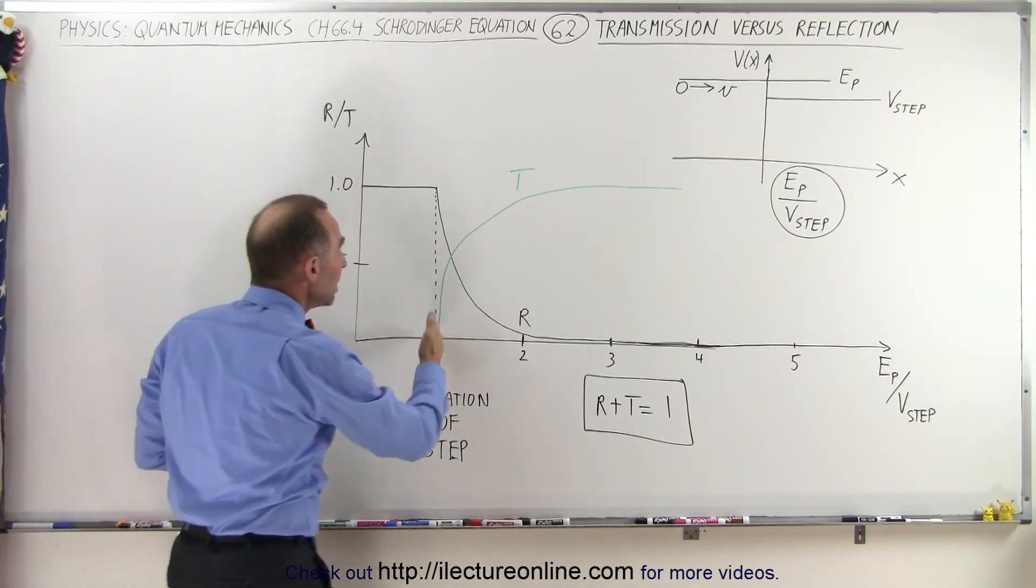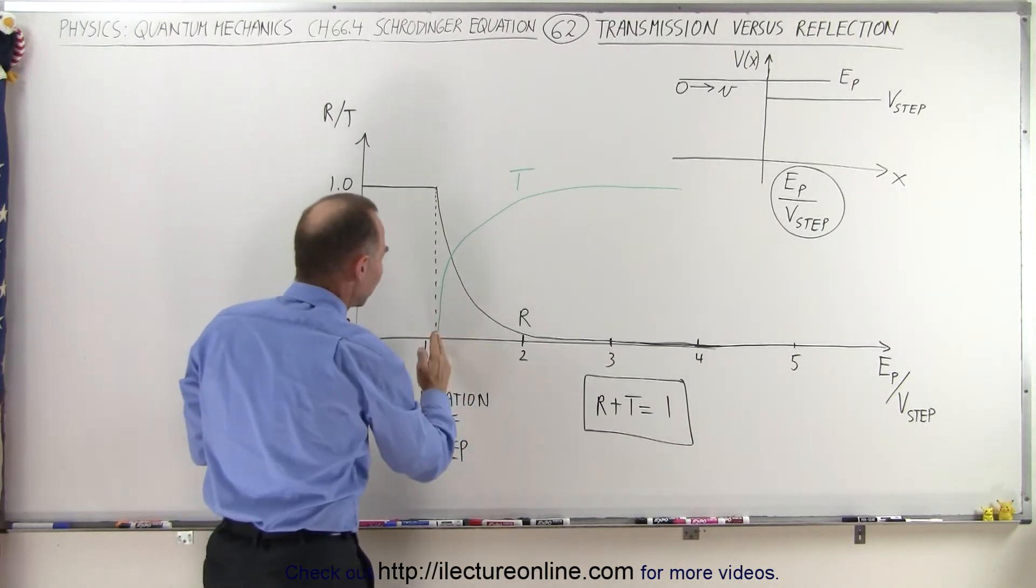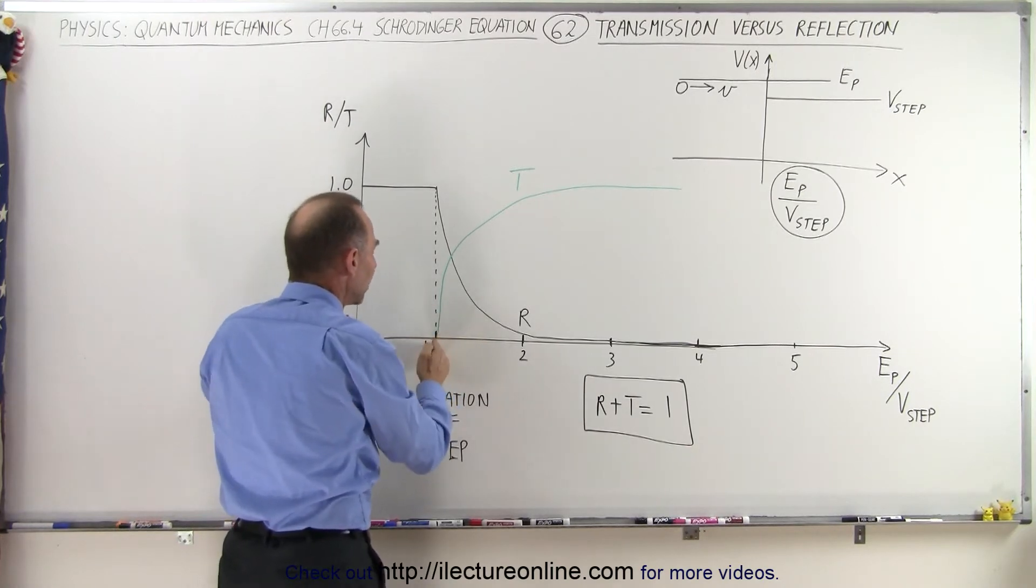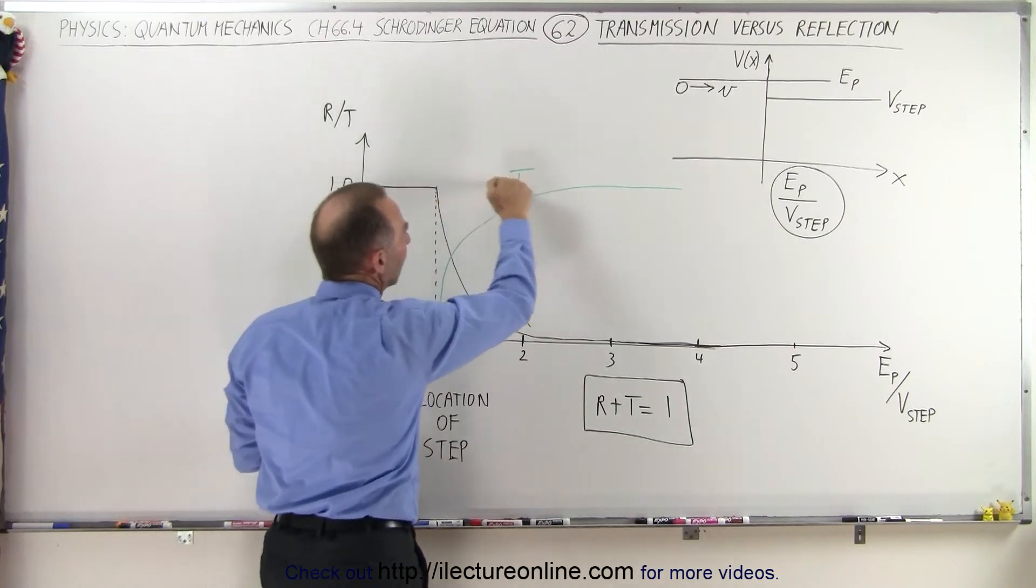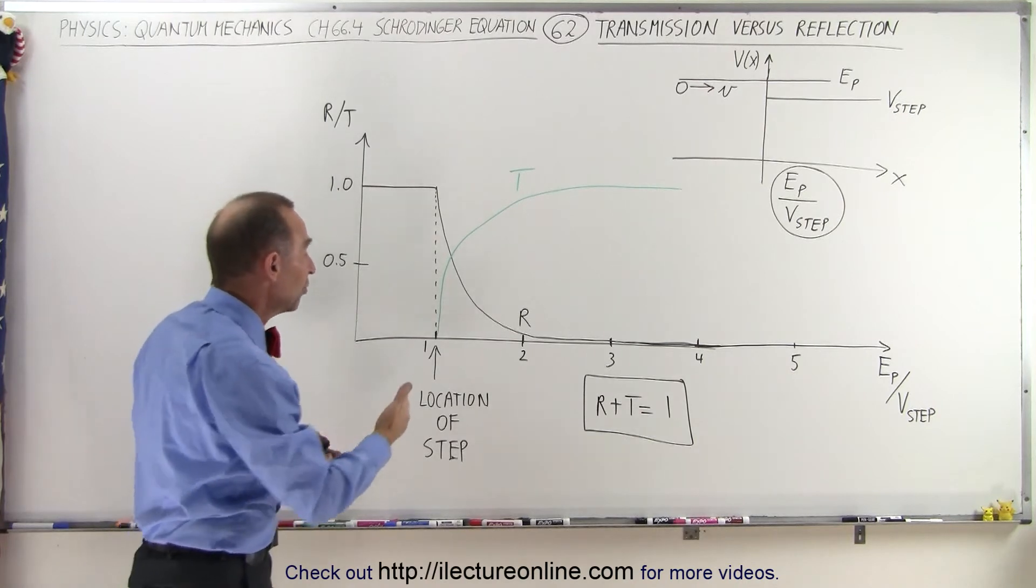However, notice the green line here. Hopefully you can see the green line because it's not very bright. But you can see that instead of having an immediate jump, as soon as the particle has more energy than the barrier, that 100% of the particles would penetrate or go across the barrier and you would have something that looks more like a rectangular step function. But that's not what we're seeing.